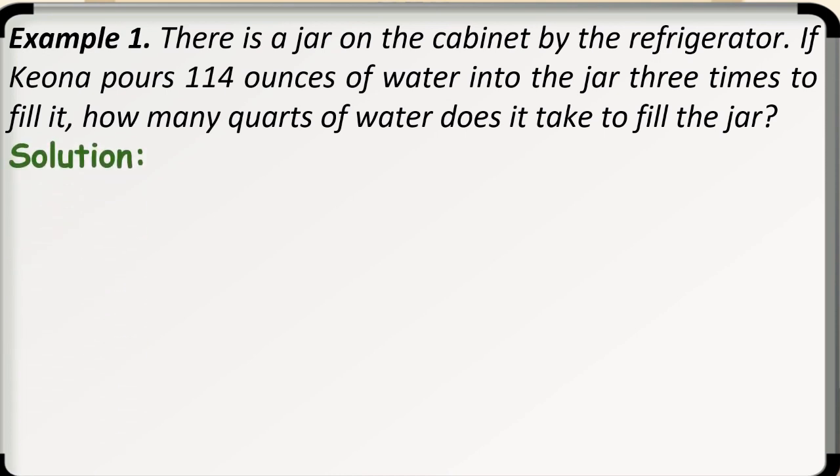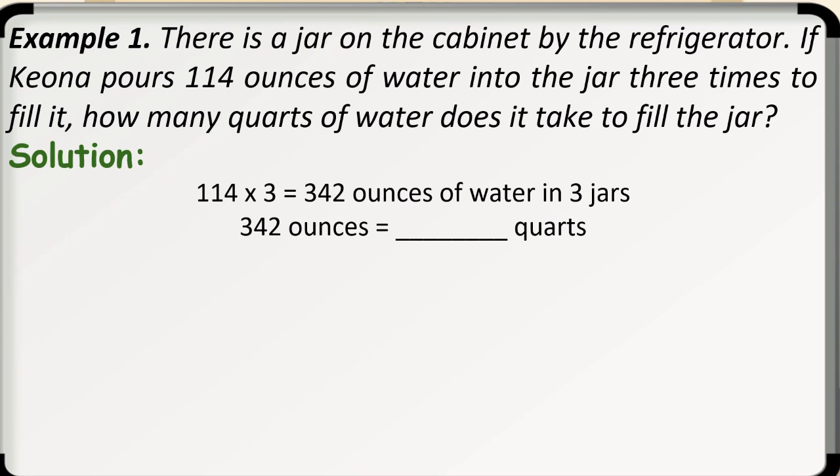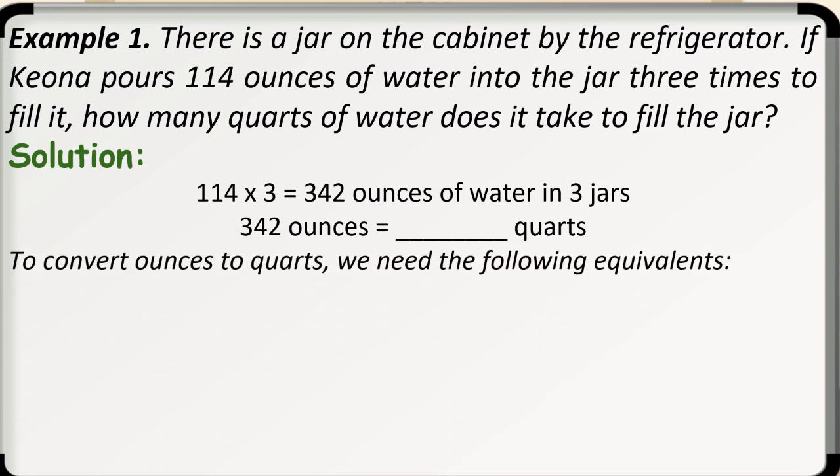Here is our solution. We have a given of 114 ounces of water that Kiana pours into the jar three times to fill it. That means we need to multiply 114 to 3, which is equal to 342 ounces. Since the question is how many quarts of water does it take, we need to convert 342 ounces into quarts. To convert ounces to quarts, we need the following equivalents for the conversion factors since we don't have a direct conversion of ounces to quarts.